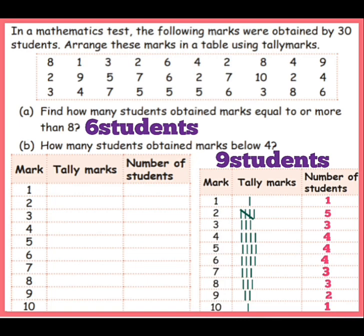OK children, see the second sum. In a mathematics test, the following marks were obtained by 30 students. Arrange these marks in a table using tally marks. The 30 students' marks are given: 8, 1, 3, 2, 6, 4, 2, 8, 4, 9, and so on. First we draw the tally mark table. We put 3 columns: first mark, next tally mark column, next number of students.